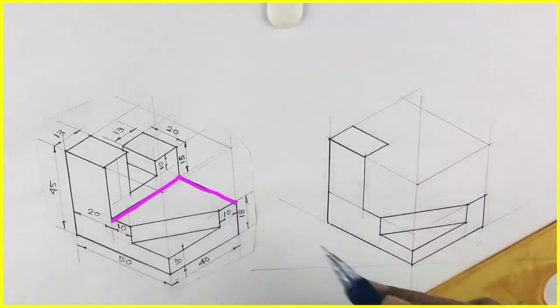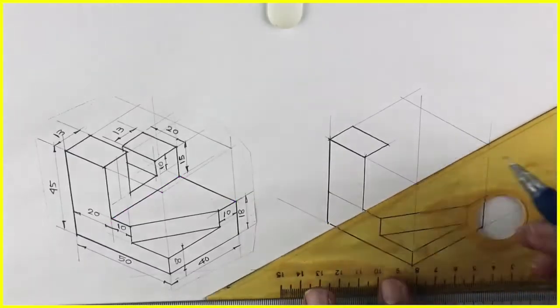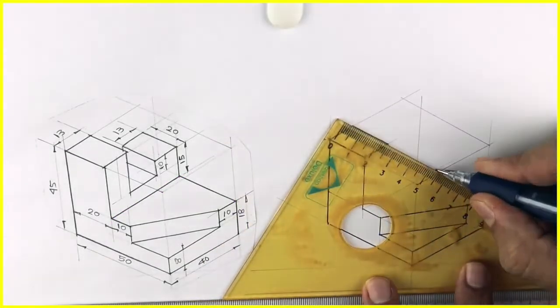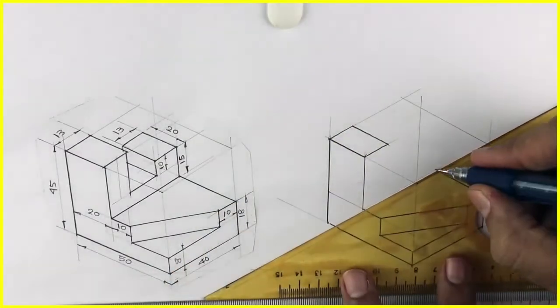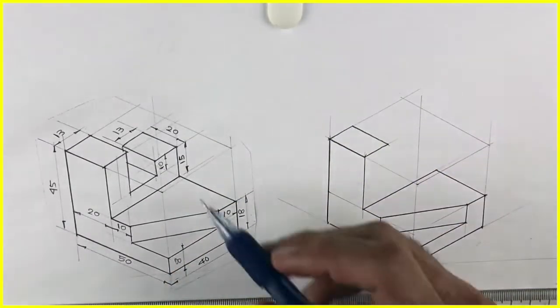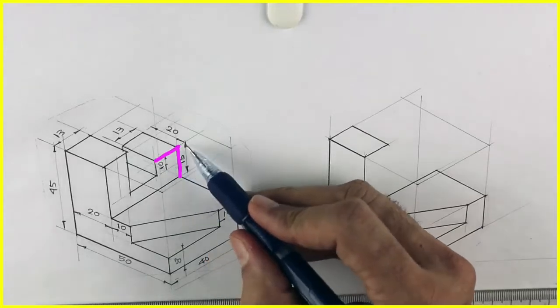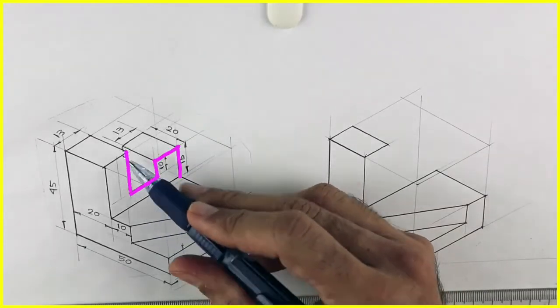Then this behind portion, that also we can draw with 30-degree head square. After that, this part, see this.